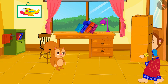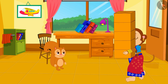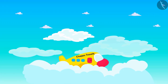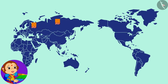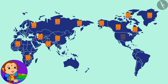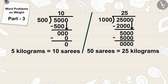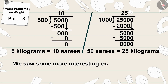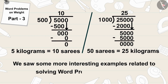Banno sent parcels of 50 of her saris abroad and Banno's saris became famous all over the world! Children, in this video we saw some more interesting examples related to solving word problems on weight.